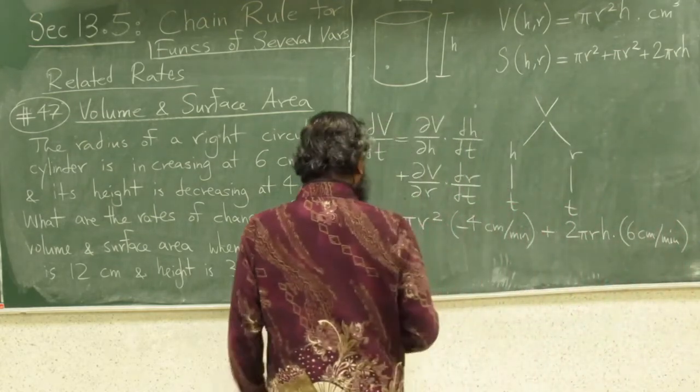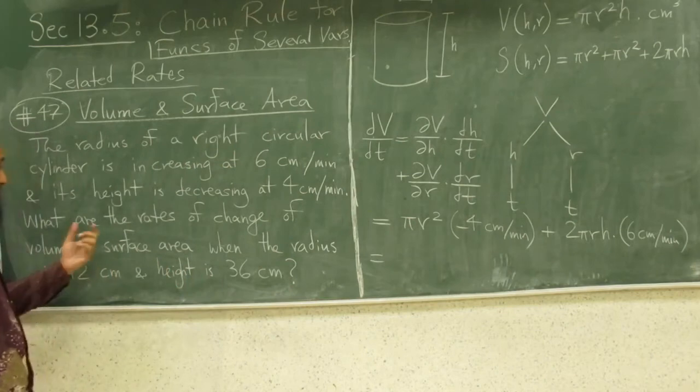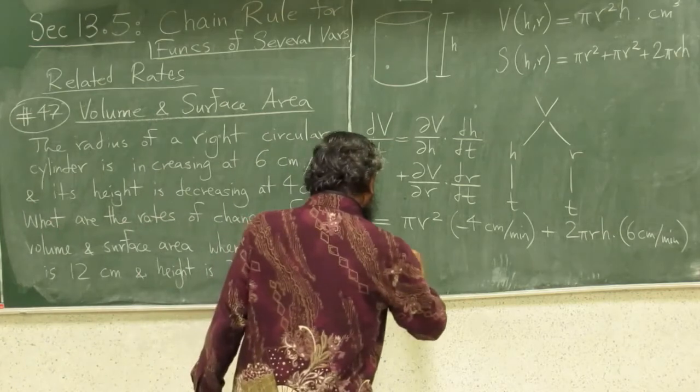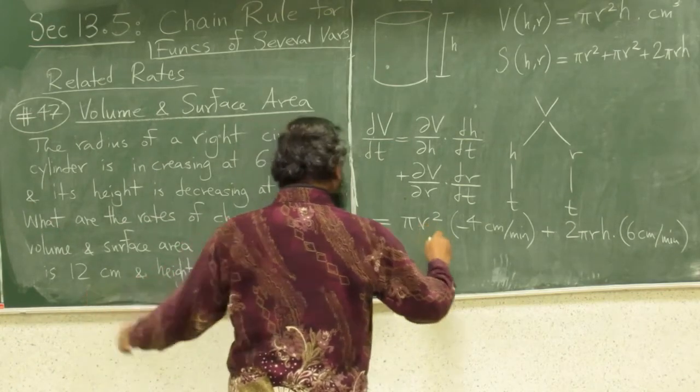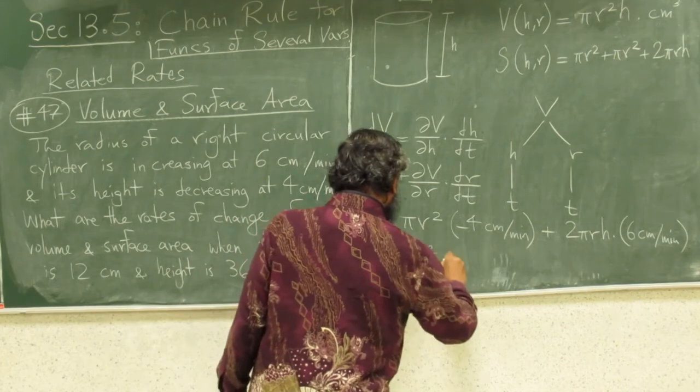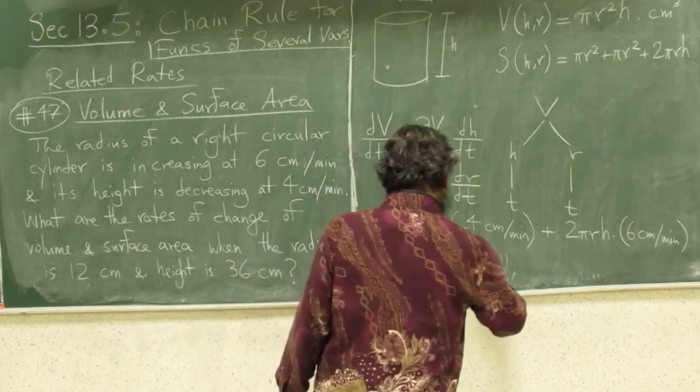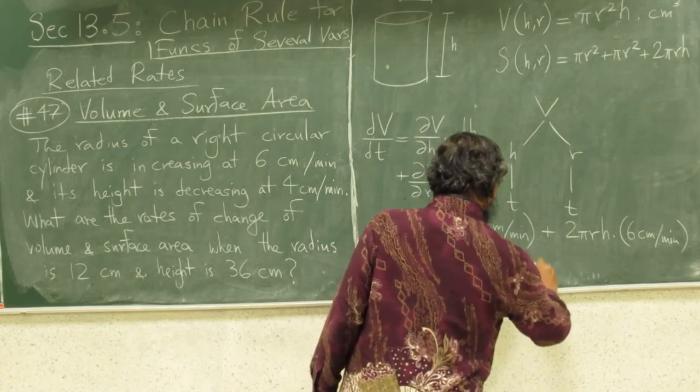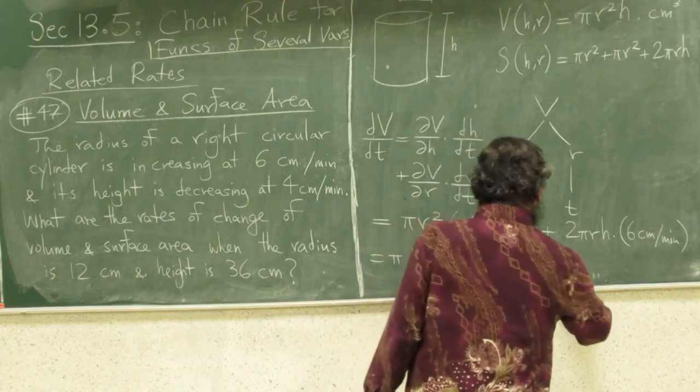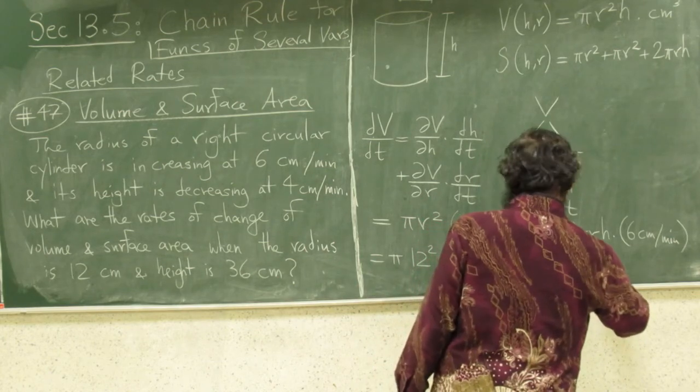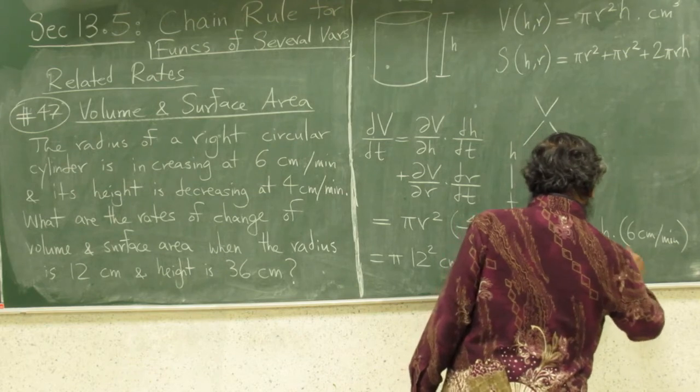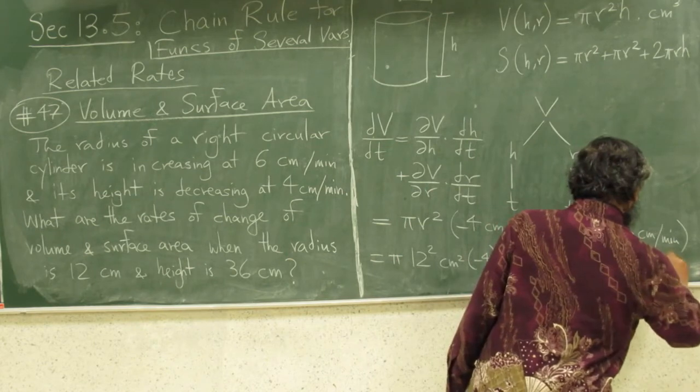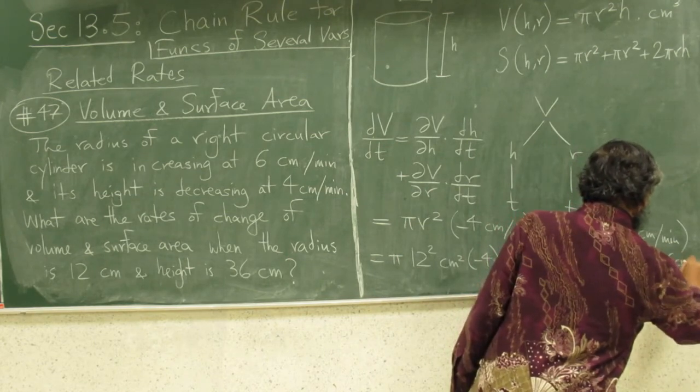Now I still need to plug these values. That's why I'm telling you at the moment when the radius is 12 and height is 36, I plug those values. Radius is 12 centimeters, so it's pi times 12 squared times minus 4 centimeters per minute, plus 2 pi r is 12, h is 36, and that's centimeter times centimeter is centimeter squared times 6 centimeters per minute.